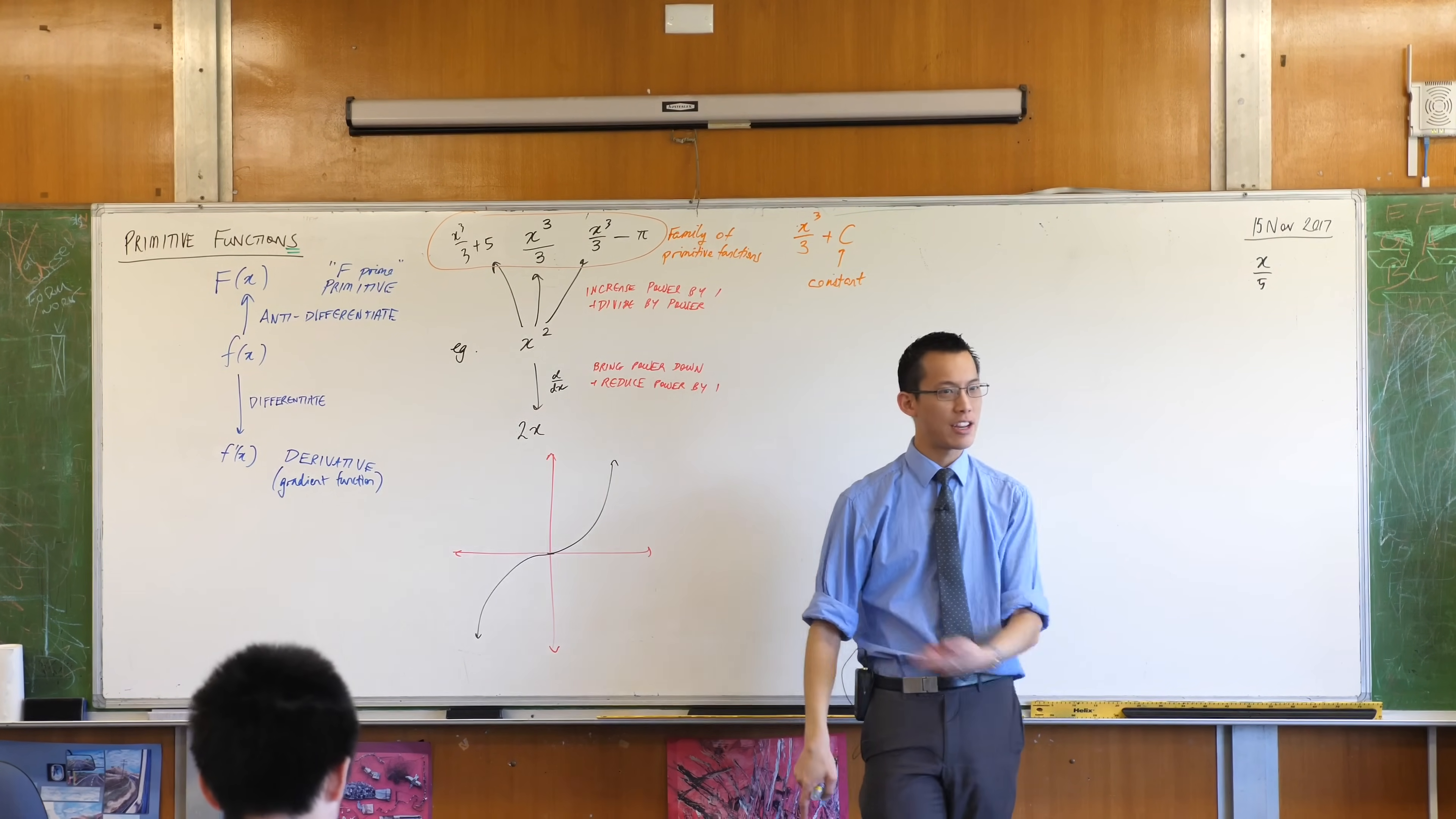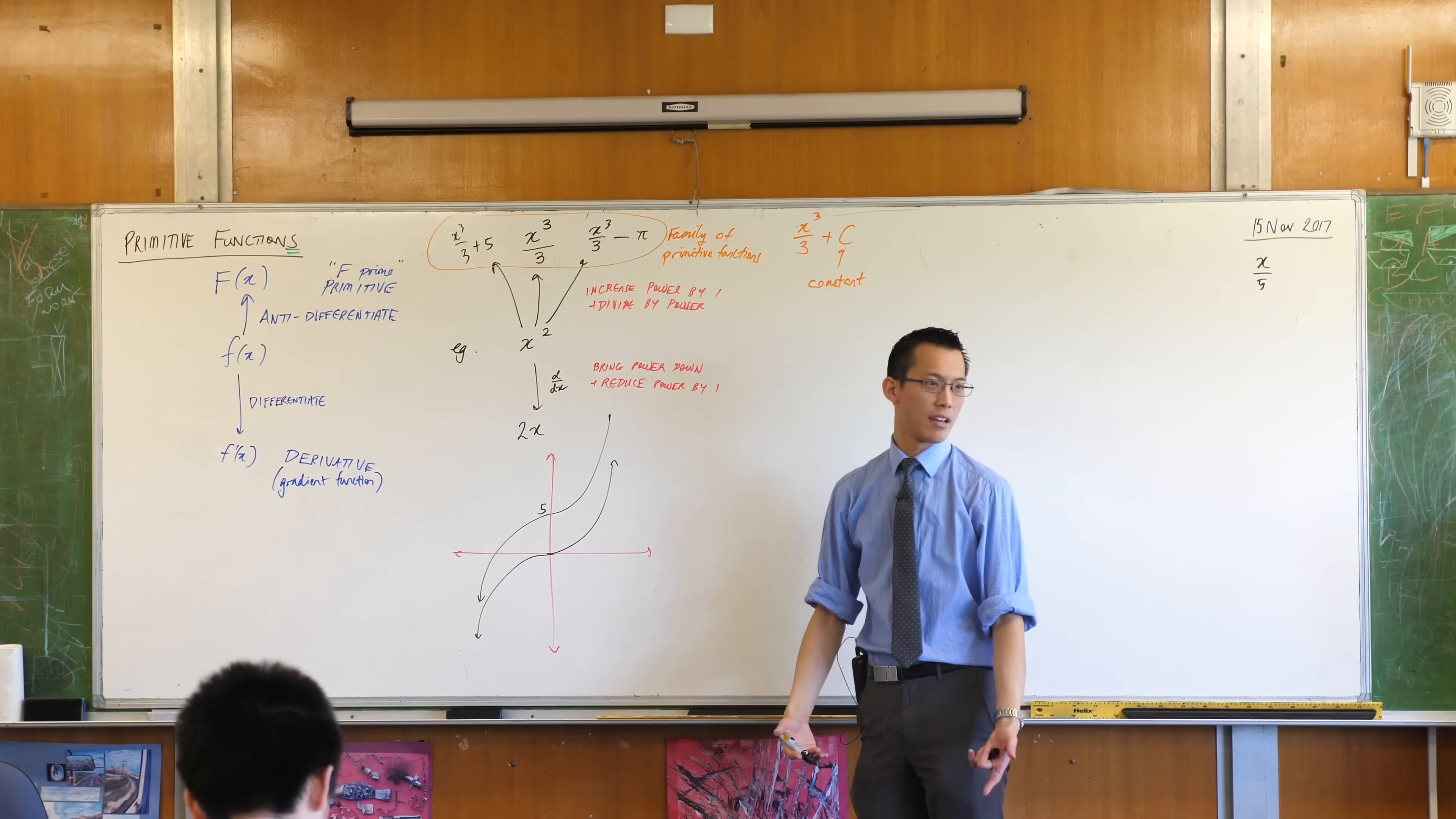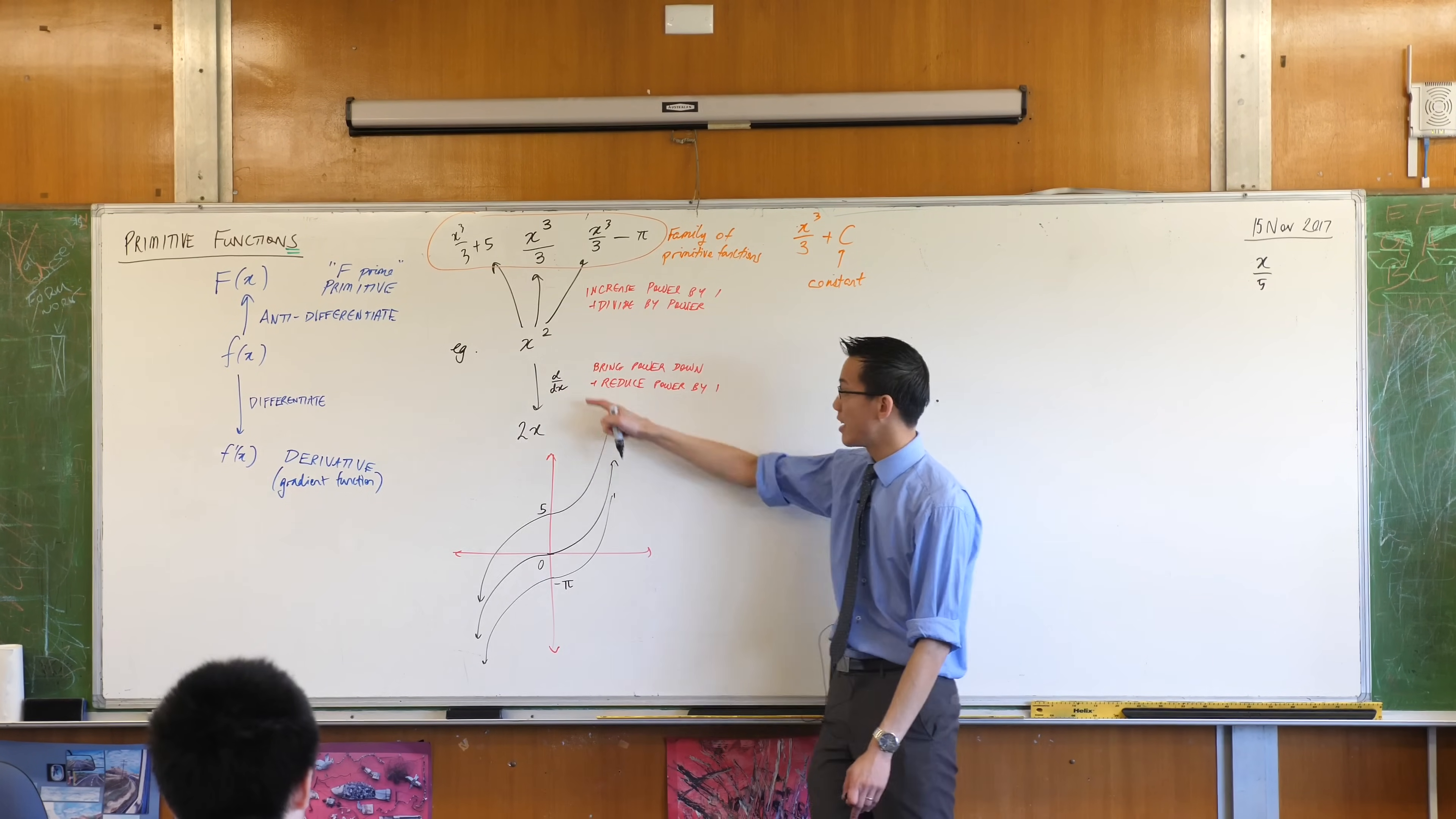What would these guys look like in terms of how they look different to this? Well, the x cubed on three plus five, where's that in relation to this? It's just been shifted vertically, it's been translated. So I can draw the same thing, just higher. Like so, and that would just be five there. What about the other one? x cubed on three minus pi. It's the same thing, but lower. So I'm just going to draw the same thing, but under here. And I guess that would make that negative pi, because that's weird.